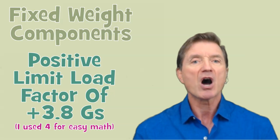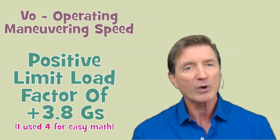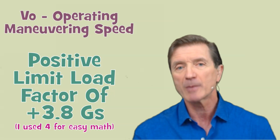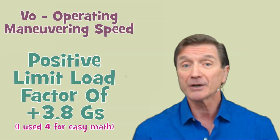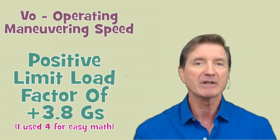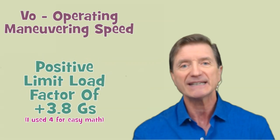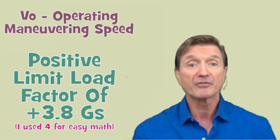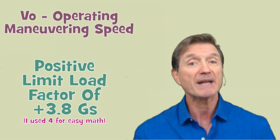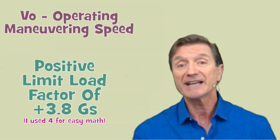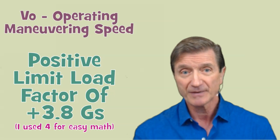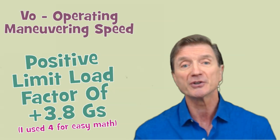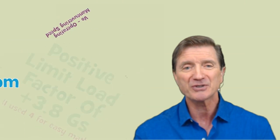So this is why we reduce our speed to a new operational maneuvering speed at weights lower than maximum gross weight. Just to be clear, I've used 4 g's as the airplane's limit load factor to make the math easier. In reality, the normal limit load factor for a standard airworthy airplane is 3.8 positive g's and negative 1.52 g's. I hope this makes the concept of maneuvering speed a little bit easier to understand. I've been Rod Machado — safe flying to you.